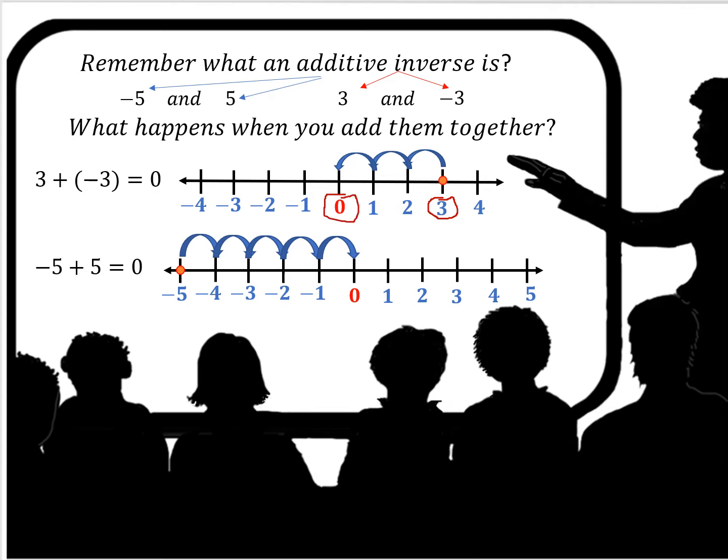Similarly when you start at negative 5 and you go to the right 5 places, where do you end up? 0.